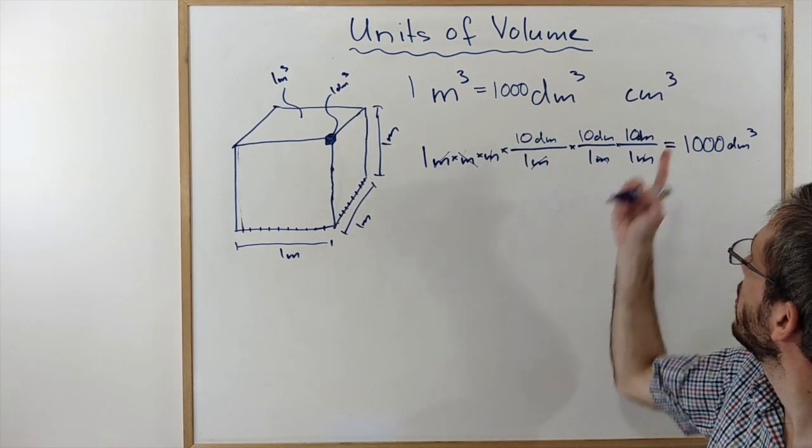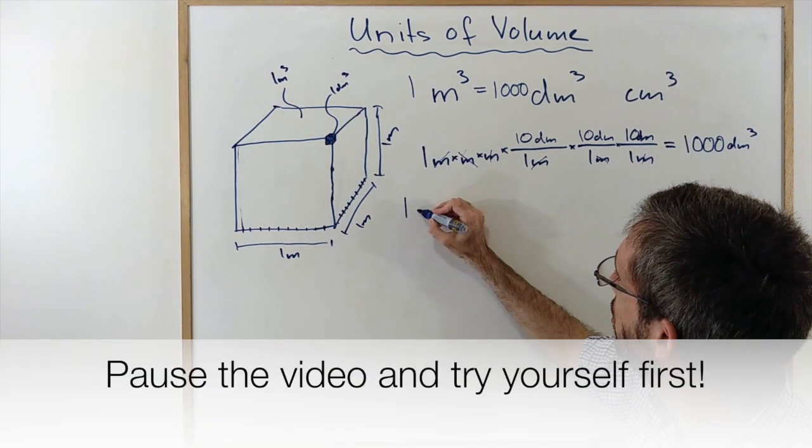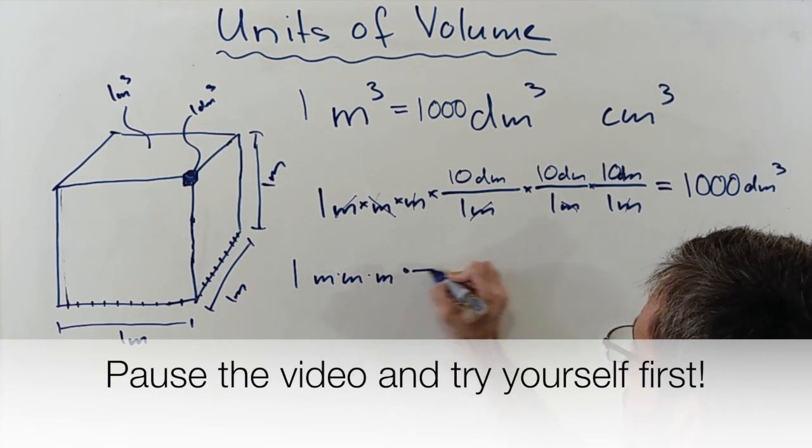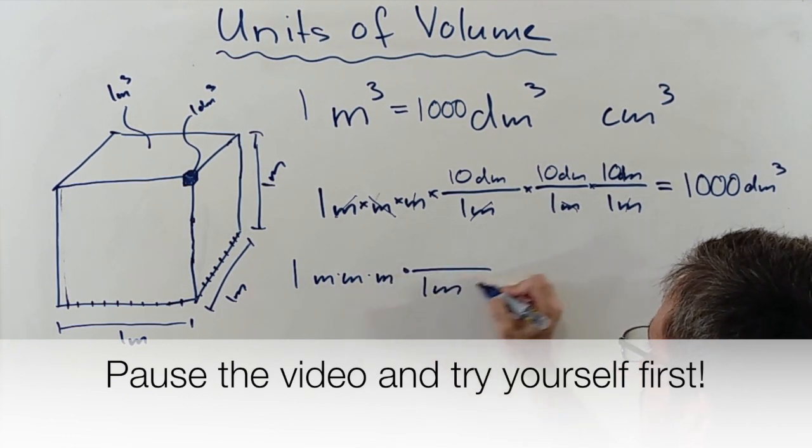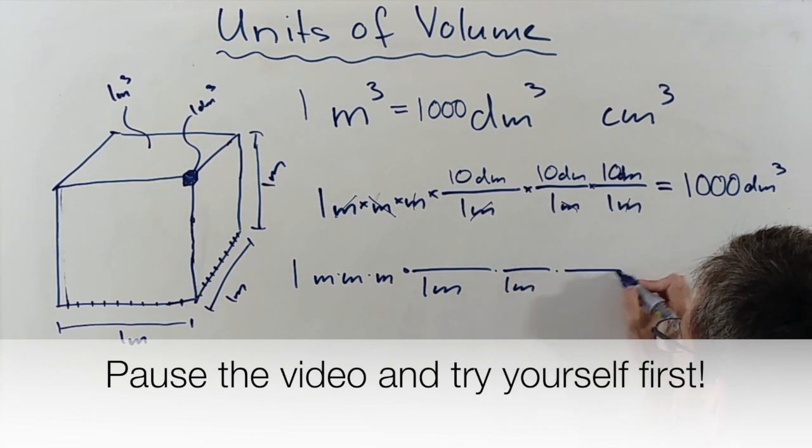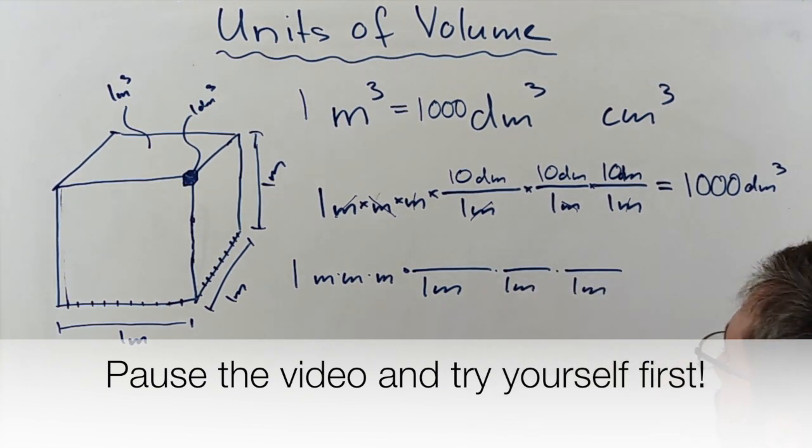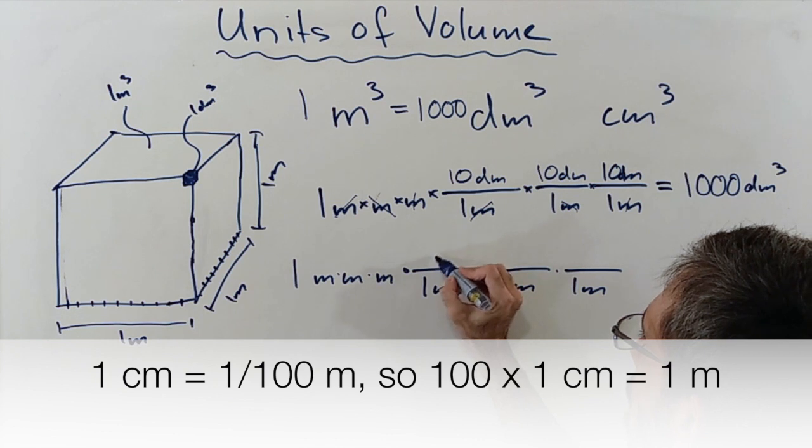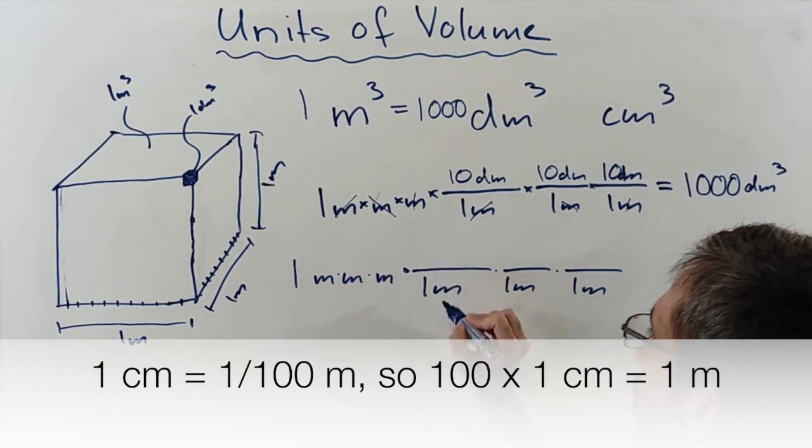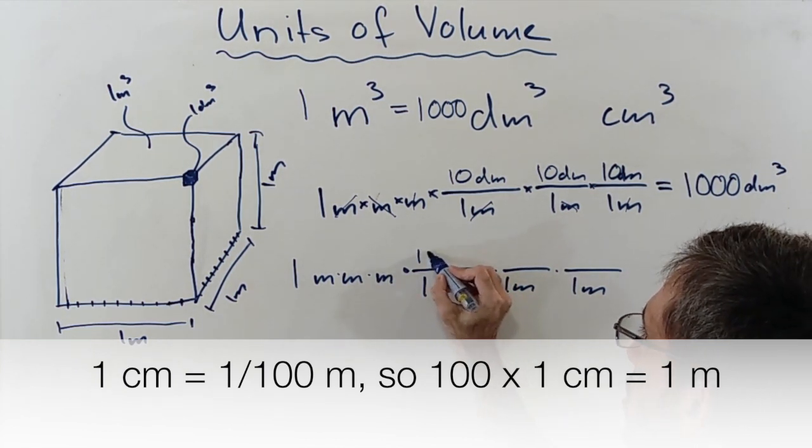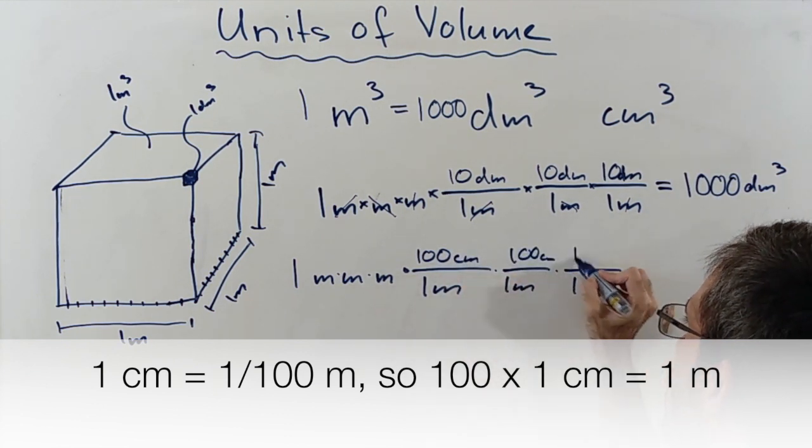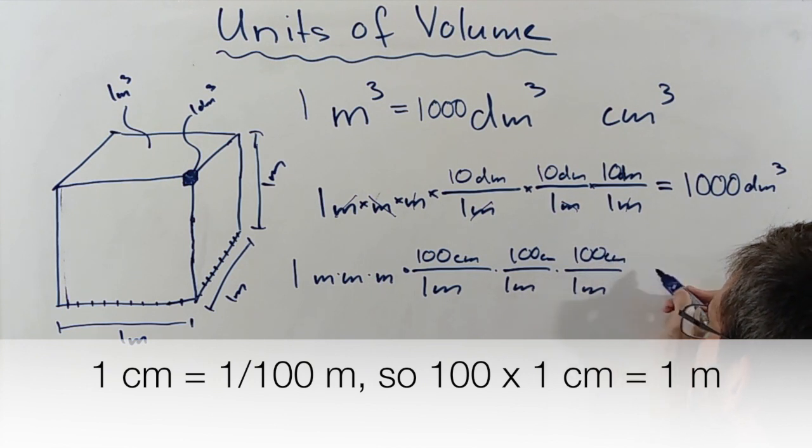Let's do the same for the centimeter cube. So I have 1 meter times meter times meter, I want 1 meter to get rid of it, another meter to get rid of it, and another one to get rid of it. And as centimeters, the C stands for 100, so I have a hundredth of a meter is a centimeter. So 100 centimeter is 1 meter times 100 centimeter is a meter times 100 centimeter is a meter.